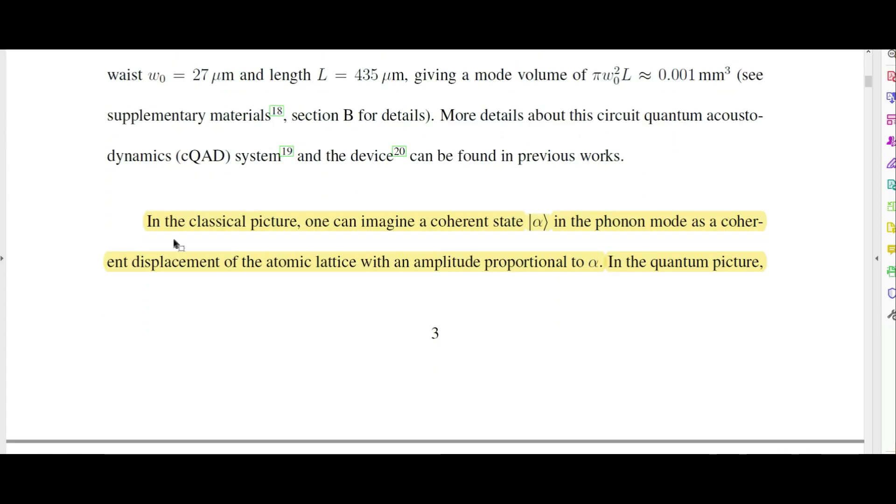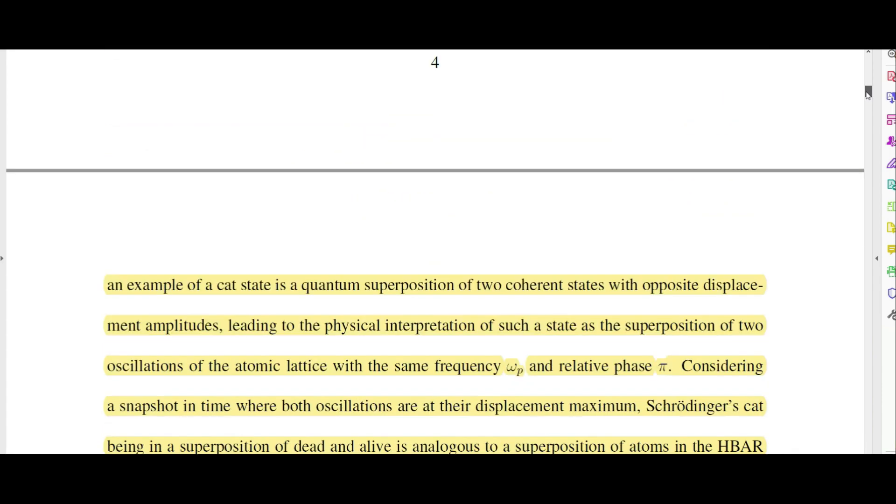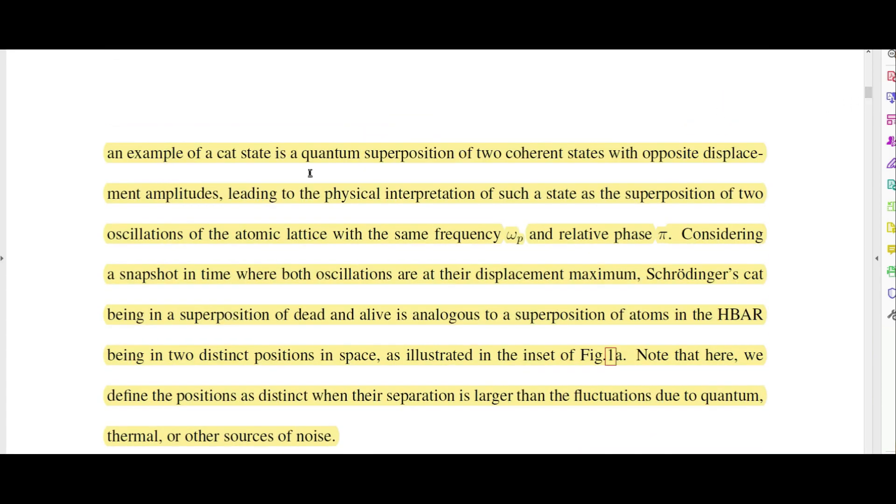The phonon, like I said, is a pseudoparticle of essentially a sound wave, so a vibration in the crystal. In the classical picture, one can imagine a coherent state alpha as a coherent displacement of the atomic lattice with an amplitude proportional to alpha. They're saying that the phonon is just going to be a vibration in this crystal. In the quantum picture, an example of a cat state is a quantum superposition of two coherent states with opposite displacement amplitudes, leading to the physical interpretation of such a state as the superposition of two oscillations of the atomic lattice with the same frequency omega_p and relative phase pi.